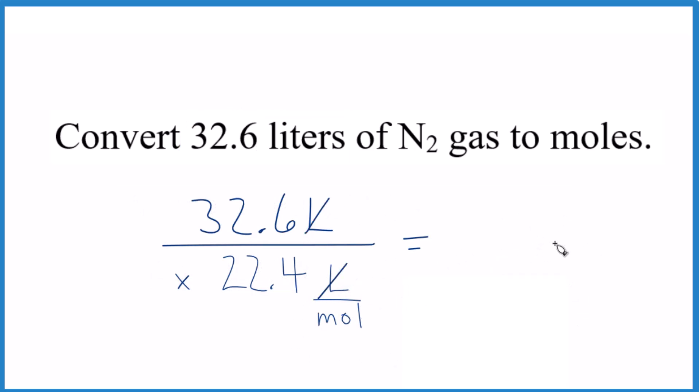They cancel out. You can see we'll be left with moles. So 32.6 divided by 22.4 equals 1.46 moles of that N2 gas.